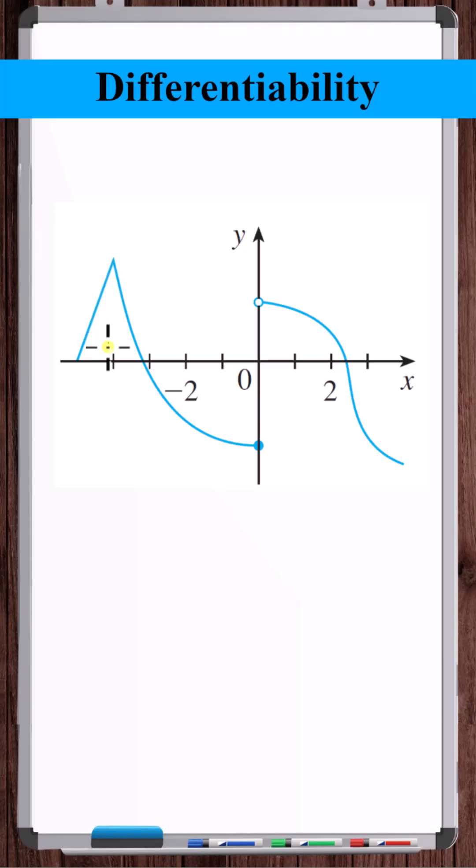Why? Because coming from the left, you have one slope and coming from the right, you have a different slope. So at x is equal to minus four, it's not differentiable.